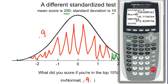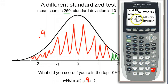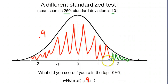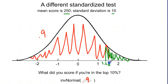We type in 0.9, not 0.1, and it says 1.28. So there's a z-score of 1.28, which corresponds to the top 10%.